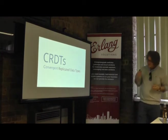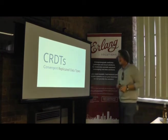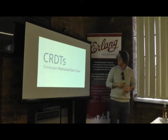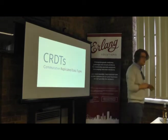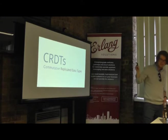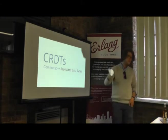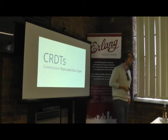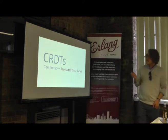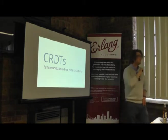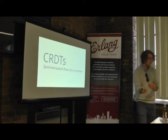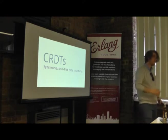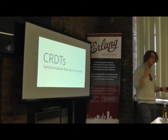CRDTs come in two flavors: convergent replicated data types (CvRDTs) and commutative replicated data types (CmRDTs), but they're all part of the general family called conflict-free replicated data types. These are synchronization-free data structures that model some primitive data structure in a way that preserves state — state always progresses — so we can reason about the ordering of events and ensure that values merge correctly.